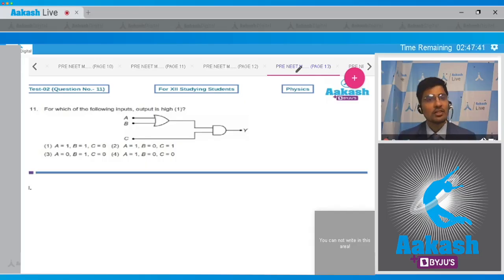Let us solve question number 11. The question says for which of the following inputs the output is high, that is 1, and four combinations of A, B, and C are given.